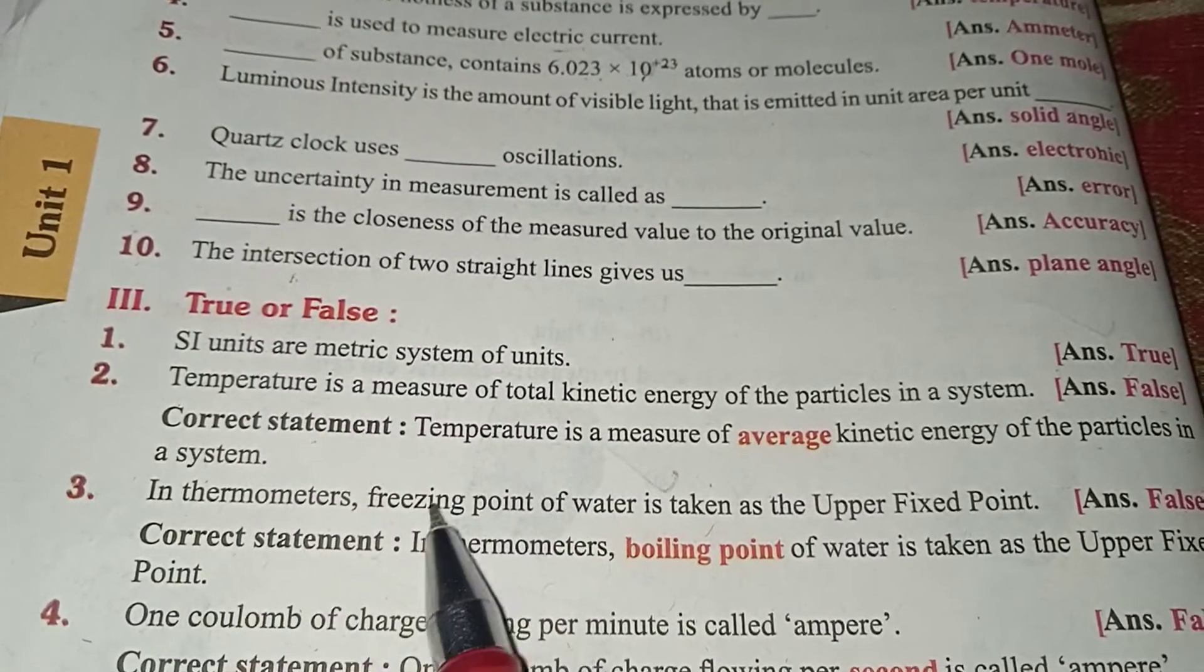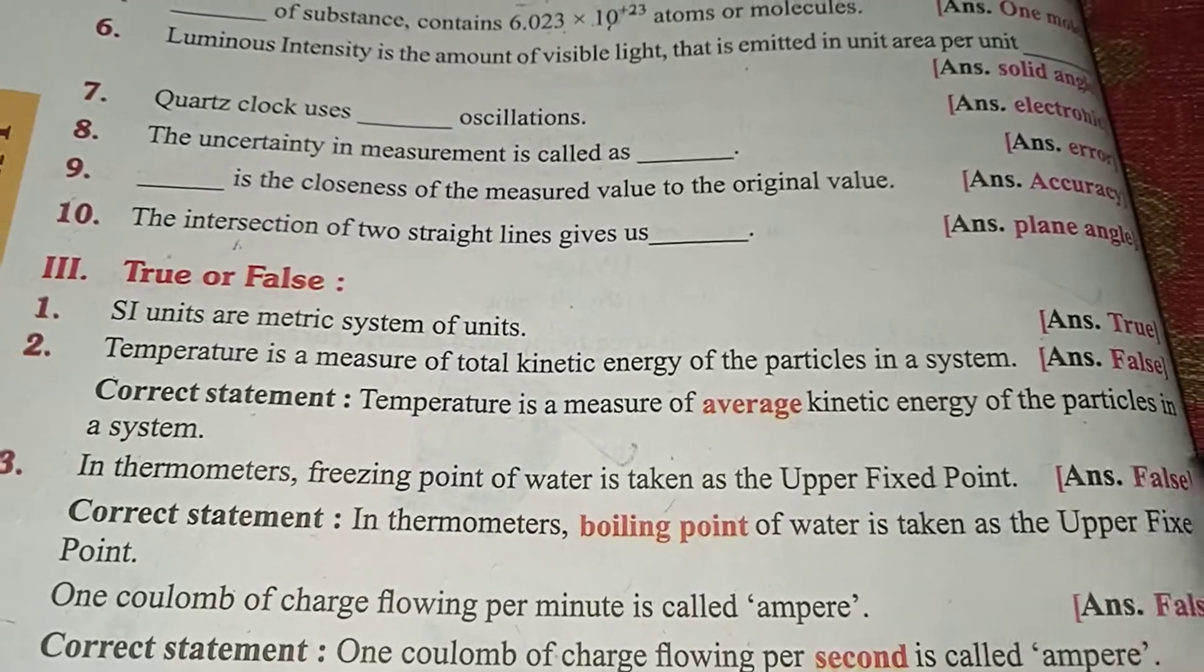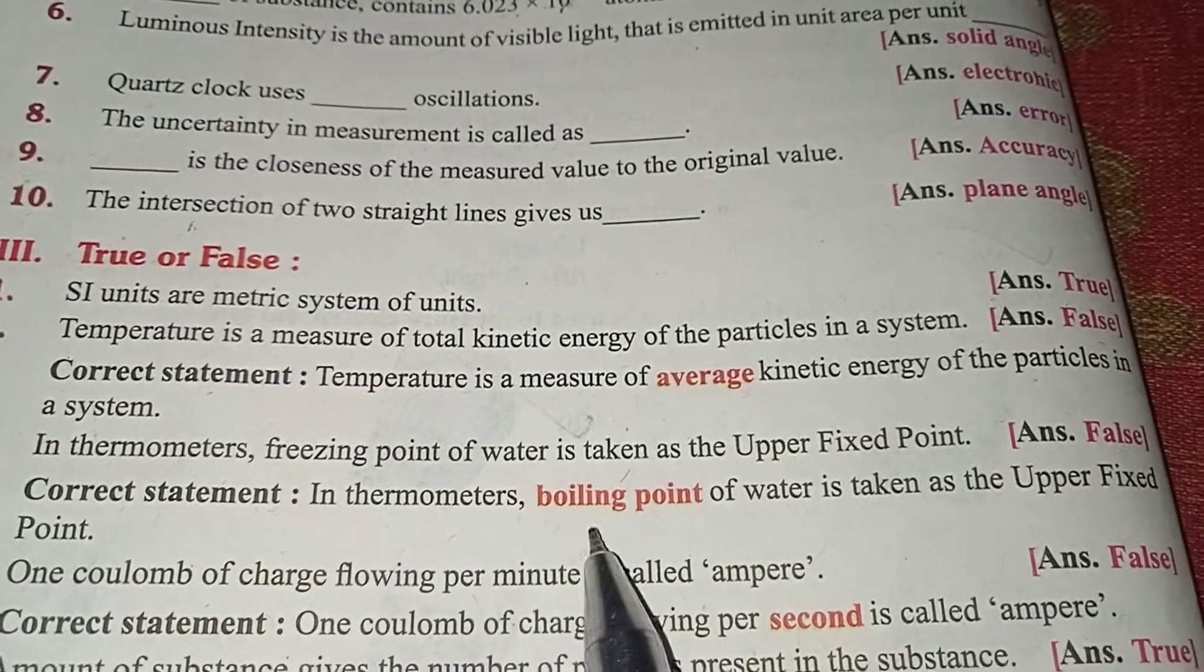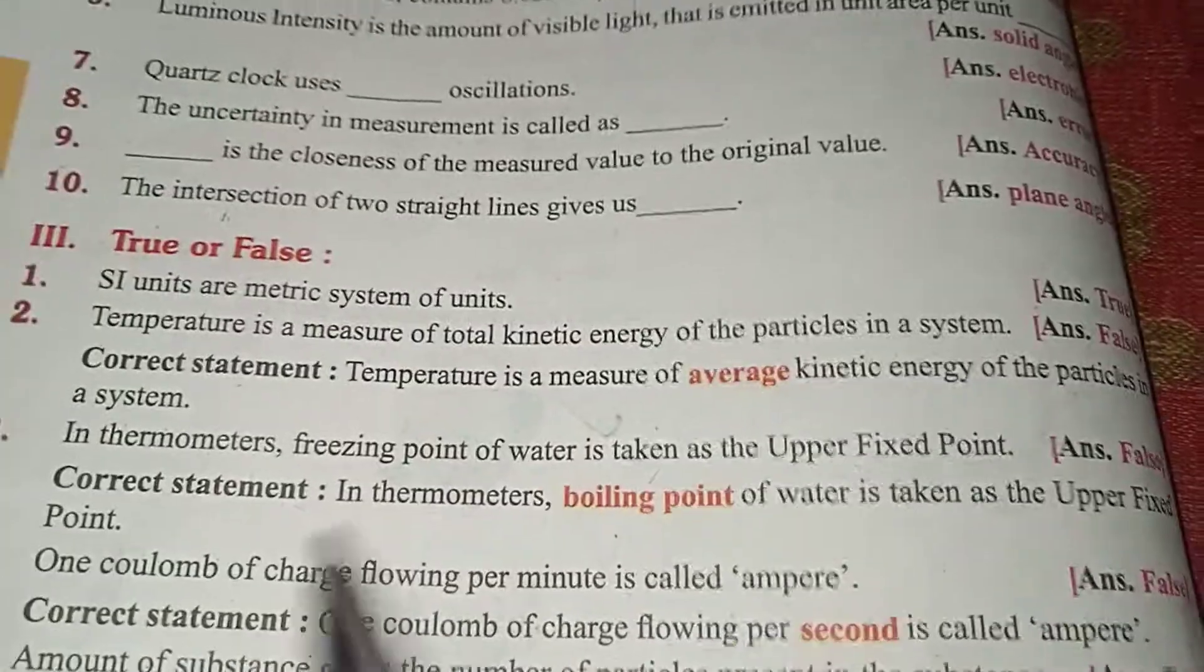In thermometers, the freezing point of water is taken as the upper fixed point. False. In thermometers, boiling point of water is taken as the upper fixed point.